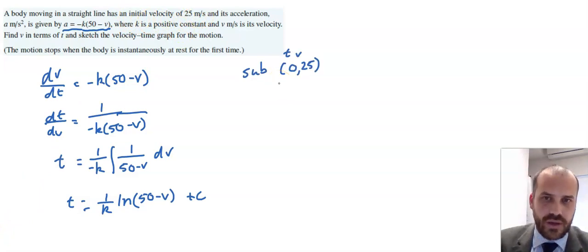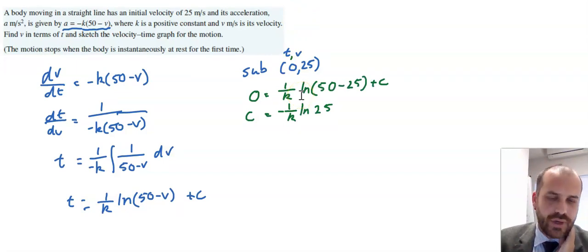Sub 0, 25 in for t and v, respectively. Sub that and rearrange. We get c is equal to negative 1/k ln(25), which gives us a t function.